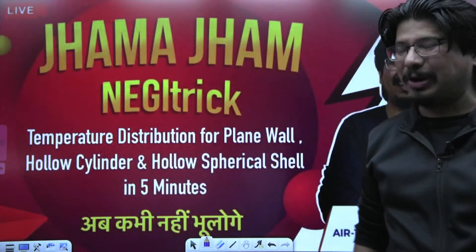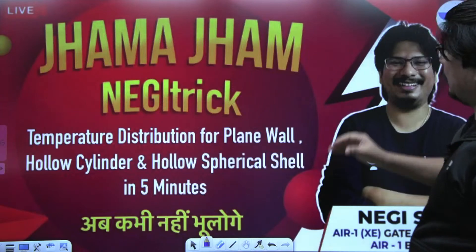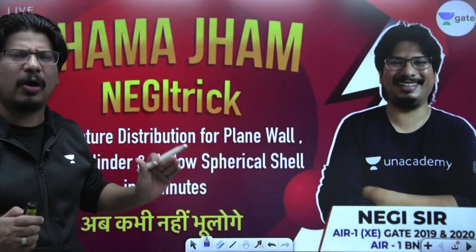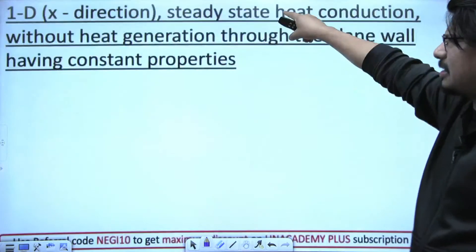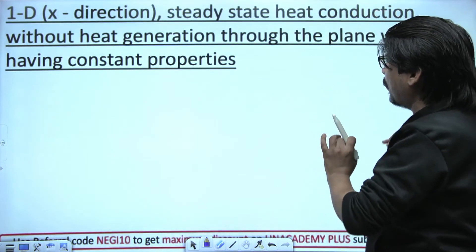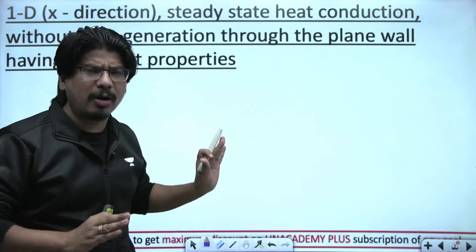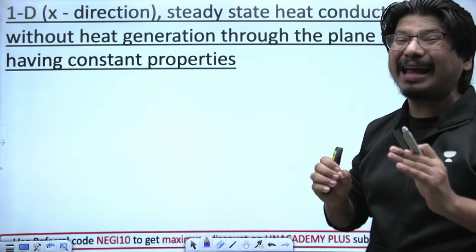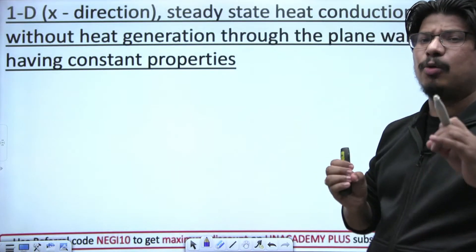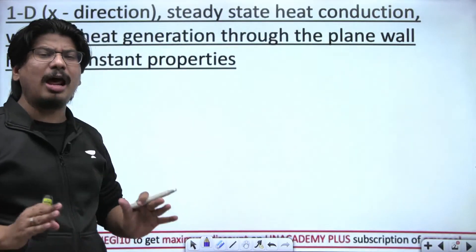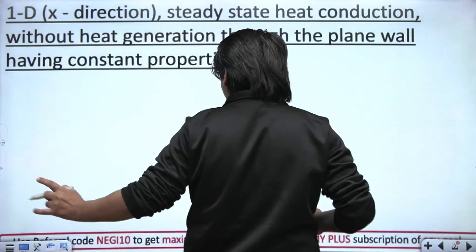Hello, Negi soldiers! I hope you are doing well. Welcome to Jama Jama Negi Trick — temperature distribution for plane wall, hollow cylinder, and hollow spherical shell. We are going to discuss the short trick related to all these things. Let us start with 1D (x-direction), steady state heat conduction without heat generation through a plane wall having constant properties.